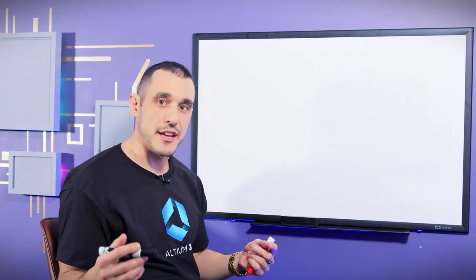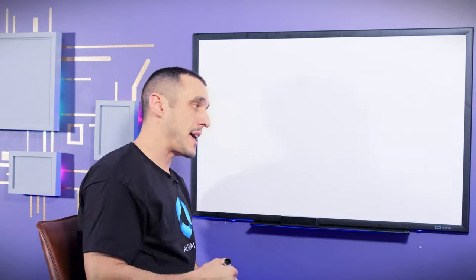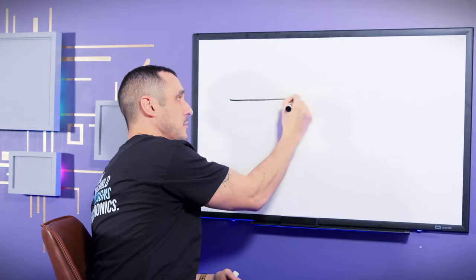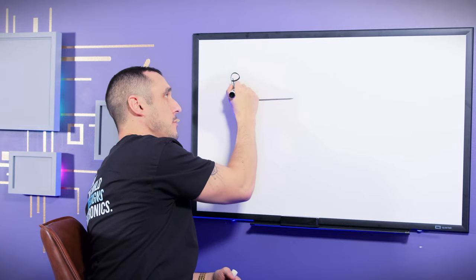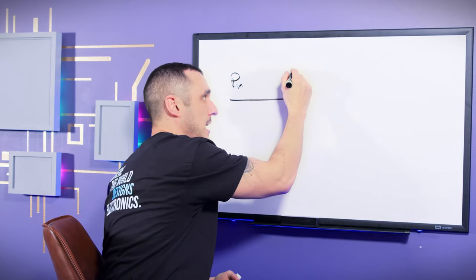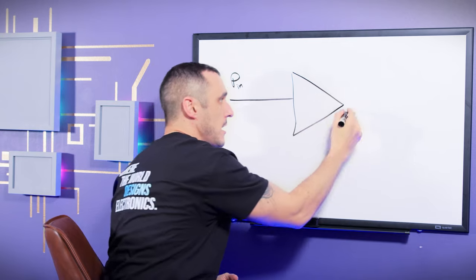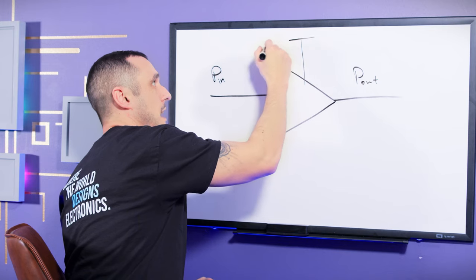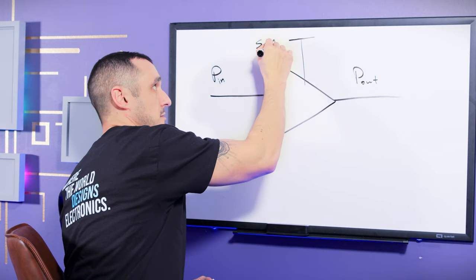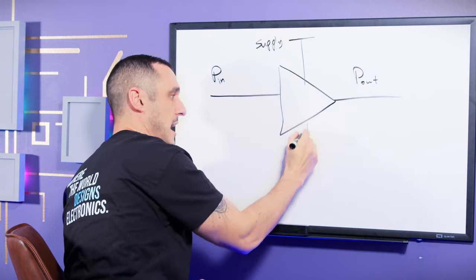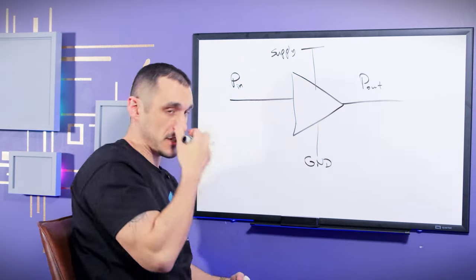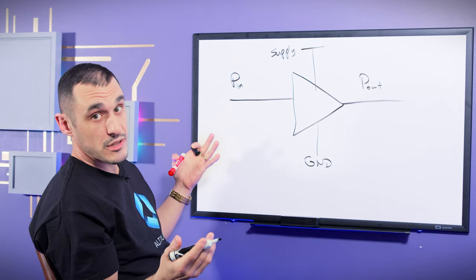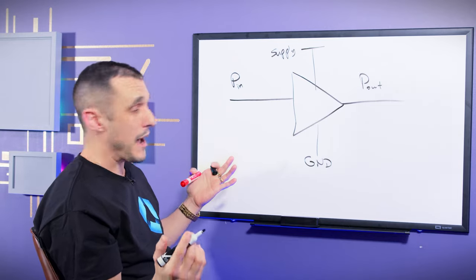So a power amplifier is pretty simple conceptually, and it has a pretty simple job. Basically, I have a signal with some power, we'll call it P-in. I then put that into my amplifier, and then it outputs P-out. And then I have some supply that I have to put in here. We'll just call this supply. And then of course, I have a ground connection. So this is pretty simple, and this pretty much outlines everything that you would need in order to have a very simple power amplifier.